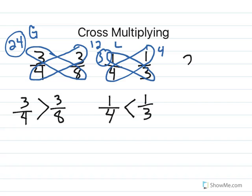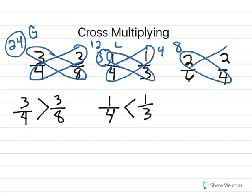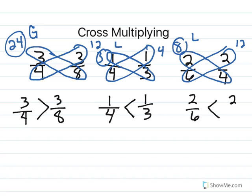For the last pair of fractions, we have two-sixths and two-fourths. I'm going to multiply across. Two times four is eight — I put my product up on top. Two times six is twelve. The one on the left is less than, so that tells me that two-sixths is less than two-fourths. Again, this is the same result we got from using the number line — this is just another way of figuring this out.